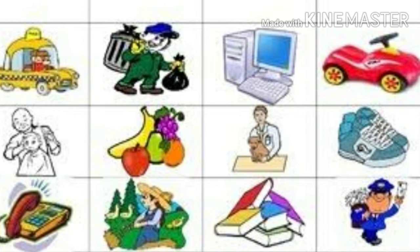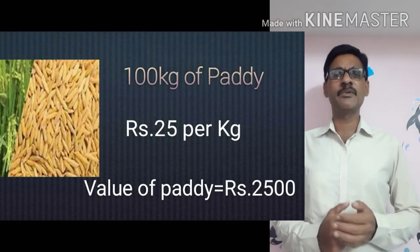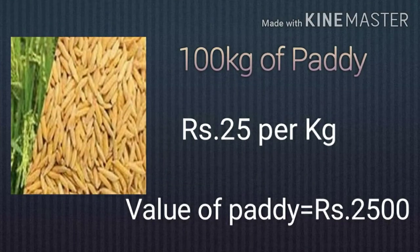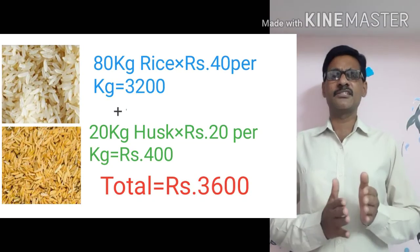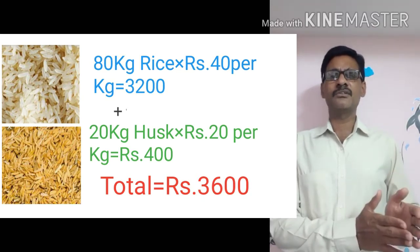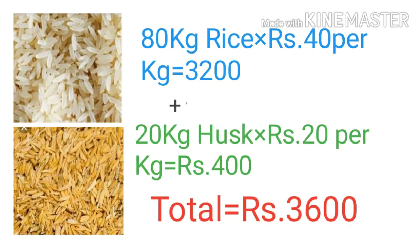There is a good example to estimate GDP. One farmer produced 100 kgs of rice and sold it at 25 rupees per kg, getting 2,500 rupees. He sold it to the rice miller. The rice miller then processed the rice, getting 80 kgs of rice and 20 kgs of husk.